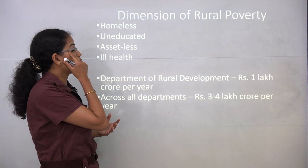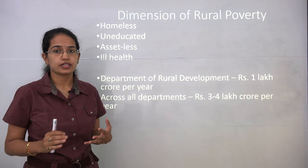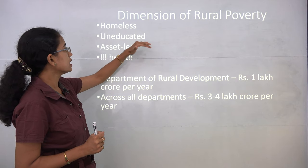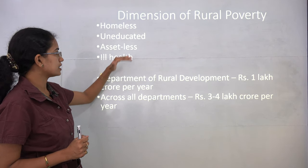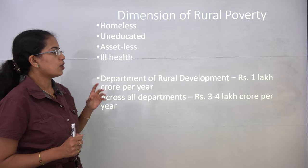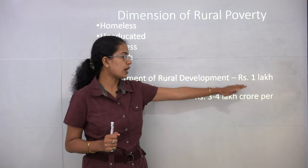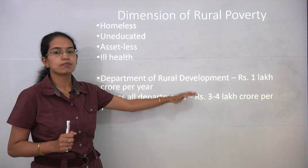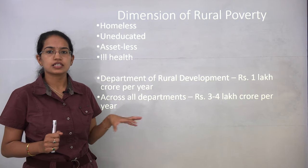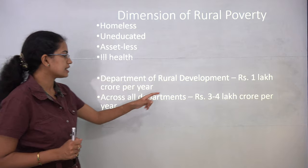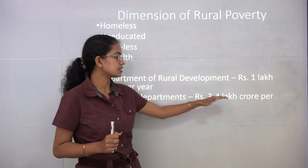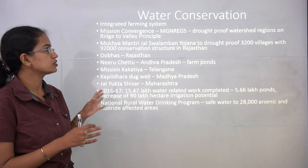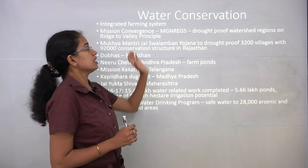Therefore, there is a need to improve conditions in rural areas so that more people are inclined to stay. Rural poverty can be understood under various dimensions like homelessness, lack of education, being assetless, and ill health. Around 1 lakh crore rupees per year is spent by the Department of Rural Development, and across all departments, 3 to 4 lakh crore rupees is given per year.